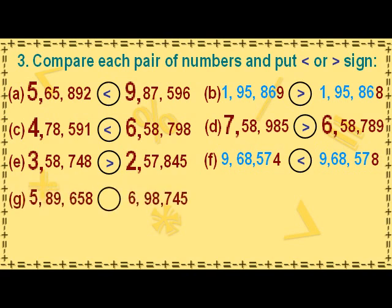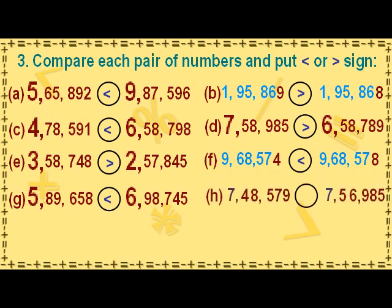The digit 5 in the lakhs place value in the first number is less than the digit 6 in the lakhs place value in the second number. Hence, the first number is smaller than the second number, so we put the less than sign after the first number.